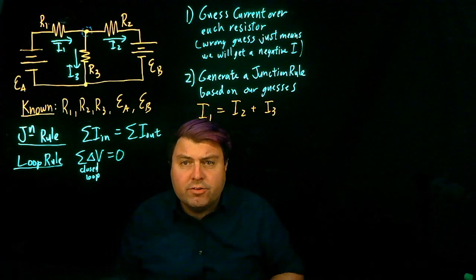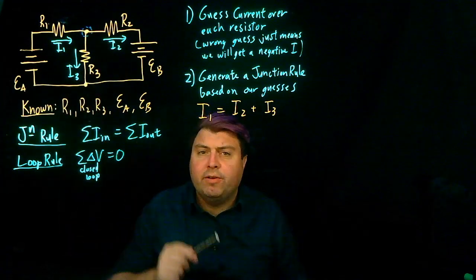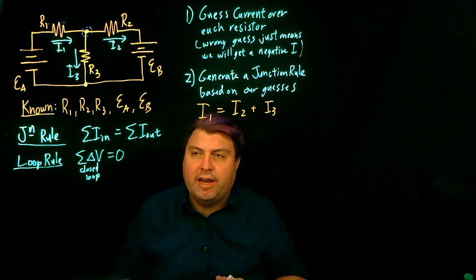Now, how many unknowns do I have? Well, I know all the resistances, I know the voltages, I don't know I1, I2 and I3, so I have two more equations that I need from this one equation that I already have.